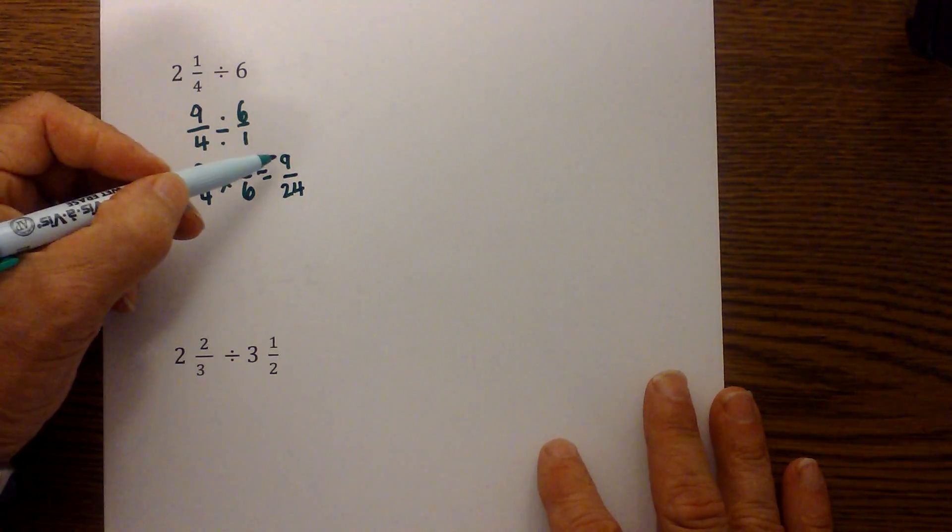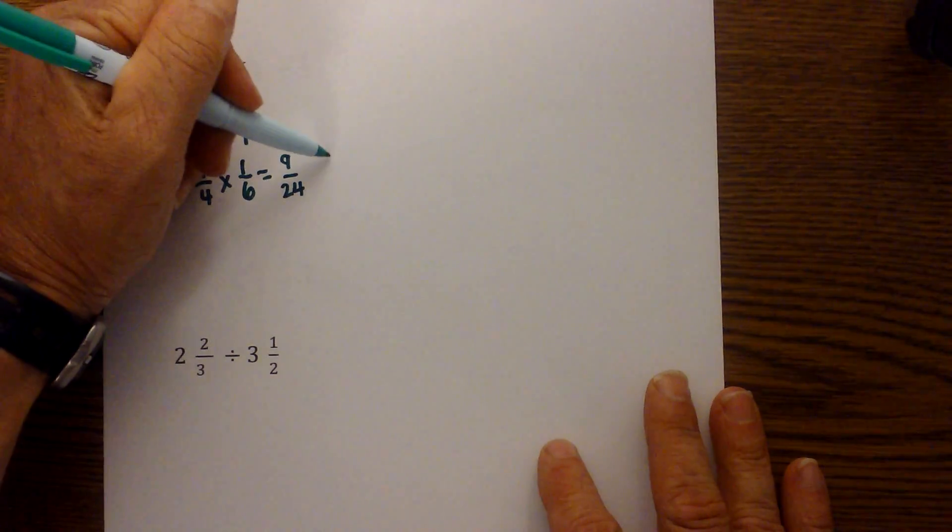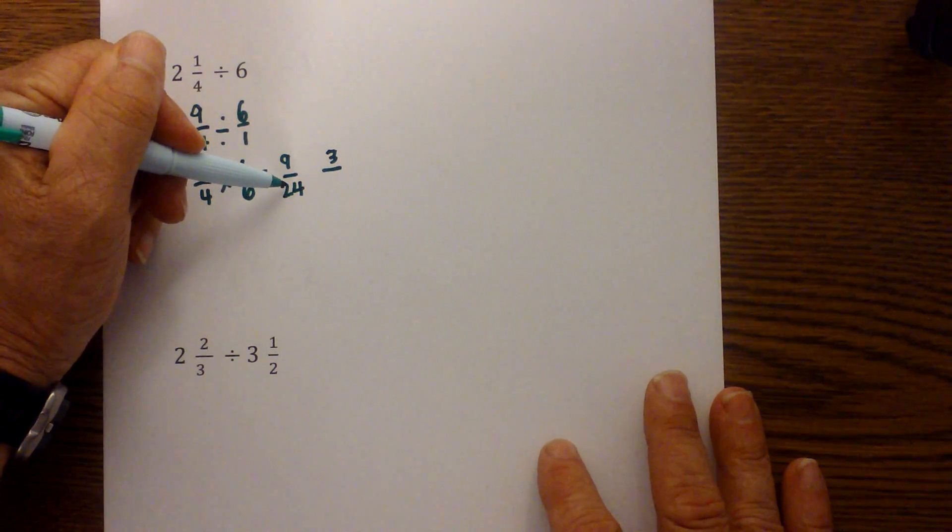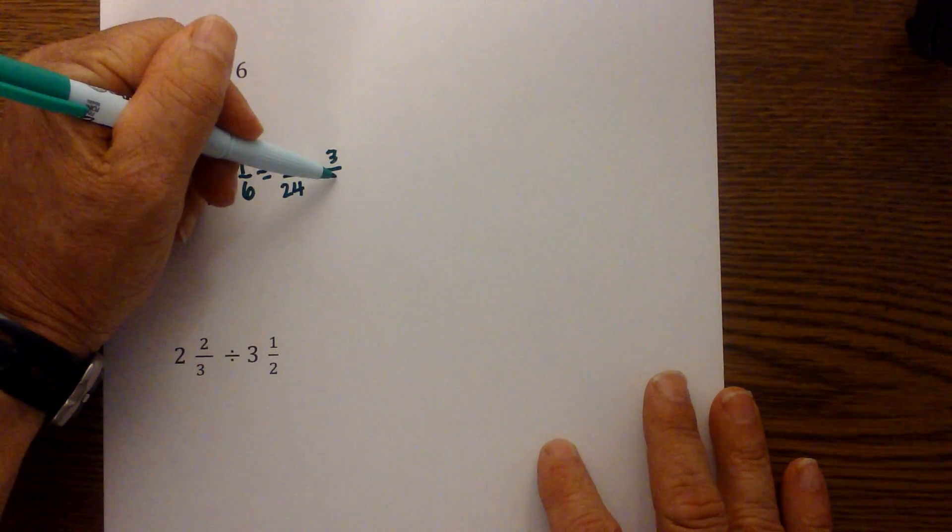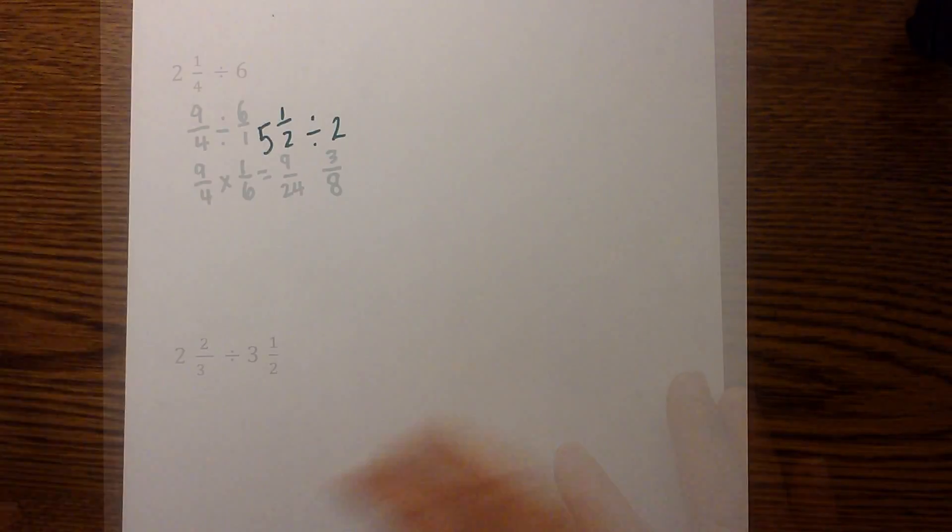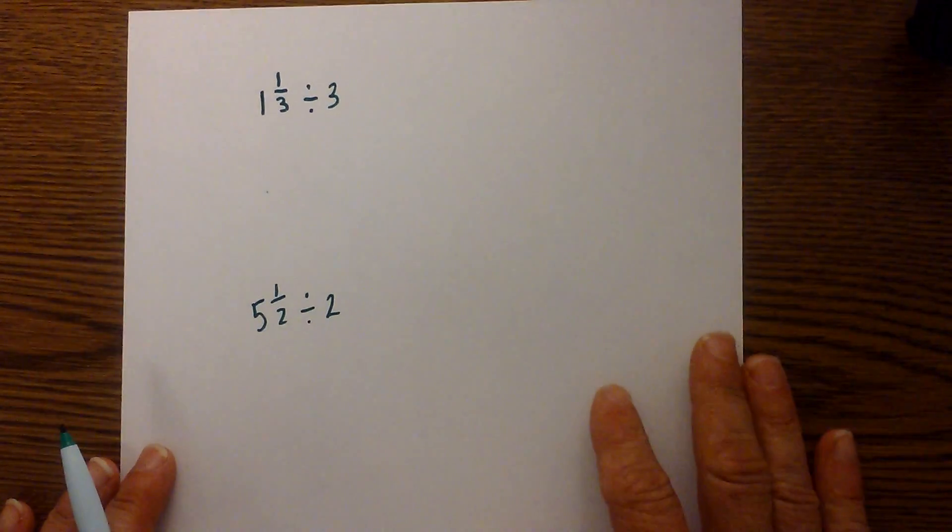And we can reduce this by 3. 9 divided by 3 is 3, and 3 goes into 24 eight times. So, it becomes 3 eighths is our answer. Go ahead and work 2 more.